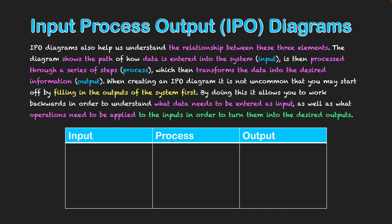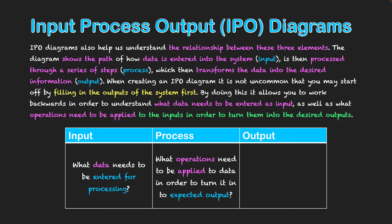Essentially, in the input column: what data needs to be entered for processing? In the processing column: what operations need to be applied to the data entered in the input column in order to turn it into our expected output? And finally, in the output column: what is the expected result we want to see after processing? That is how they all interlink together.